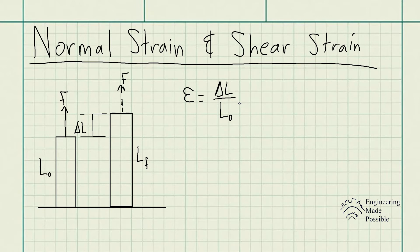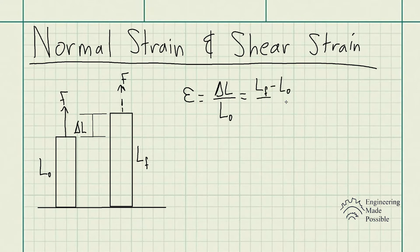If you multiply it by 100 you get the percentage that it actually deformed. Writing this out a little further, the change in length is essentially the final length minus the original length, divided by the original length. This is the equation for normal strain.